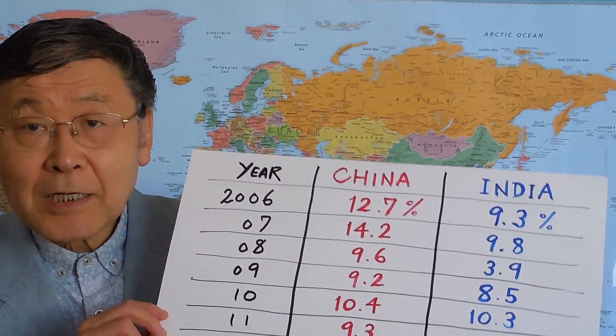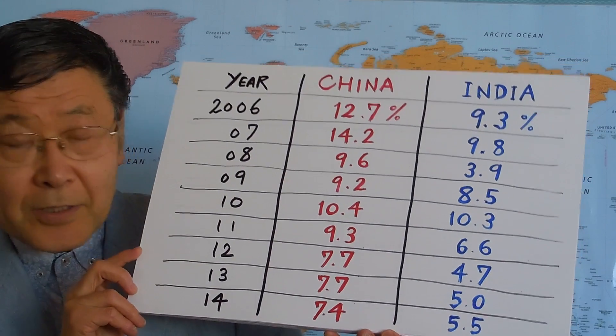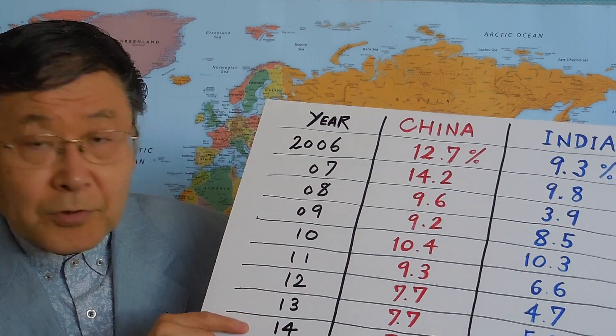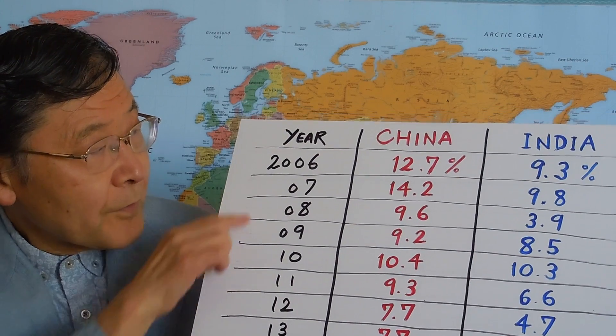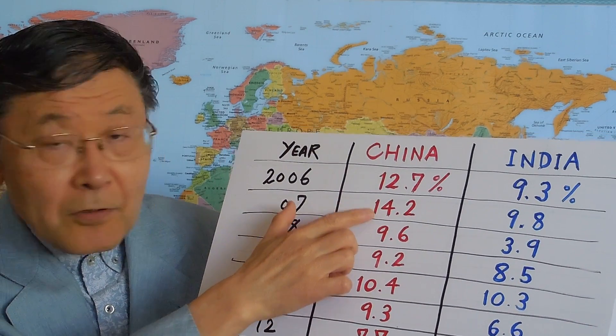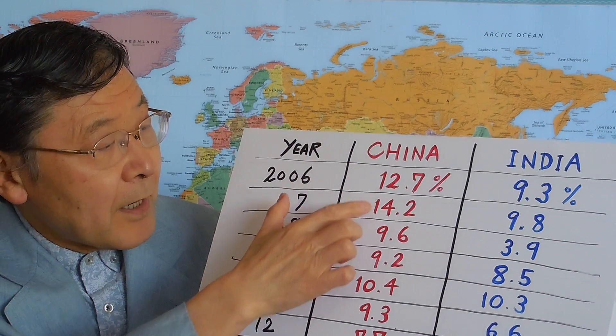One of the questions is how fast each economy has been growing to reach this level. China has been growing at a phenomenal rate, faster than any other countries, certainly faster than India. Looking at numbers from 2006 to 2014 — these 9 years — China has been maintaining a very high growth rate, almost double-digit every year, as you can see.